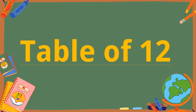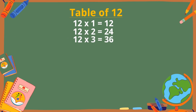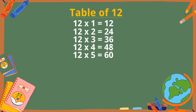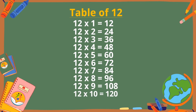Table of 12. 12×1 is 12, 12×2 is 24, 12×3 is 36, 12×4 is 48, 12×5 is 60, 12×6 is 72, 12×7 is 84, 12×8 is 96, 12×9 is 108, 12×10 is 120.